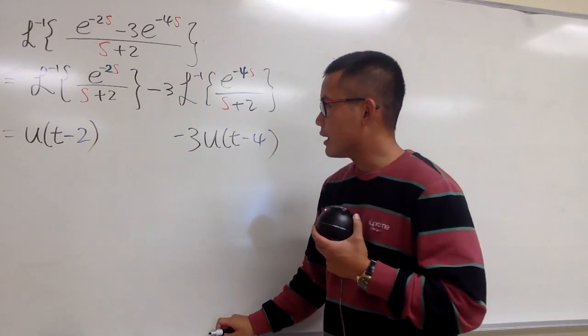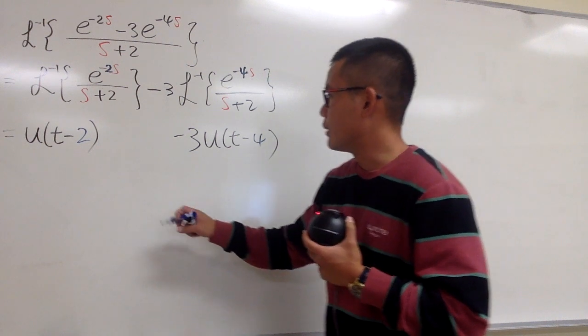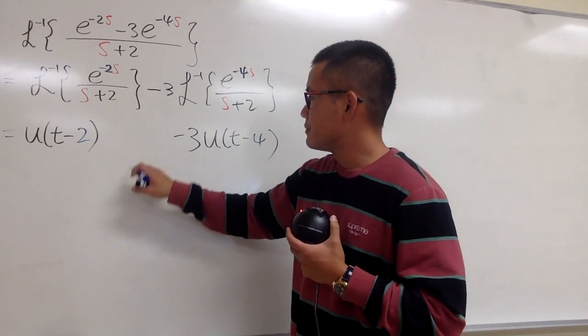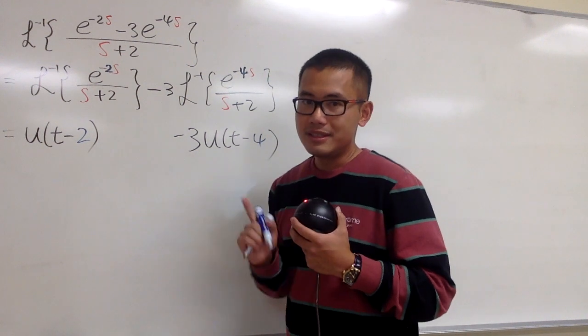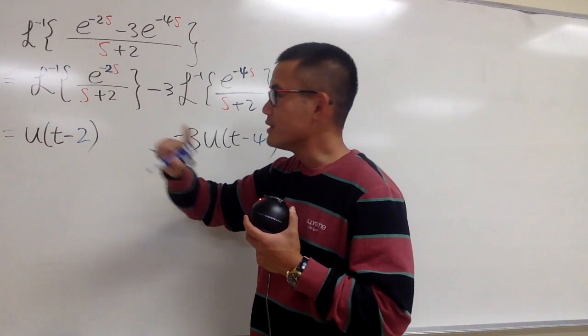Let's do that on the side. Here's how you can do it. When you take this out, when you have e to the negative 2s, this will tell you you must have this.